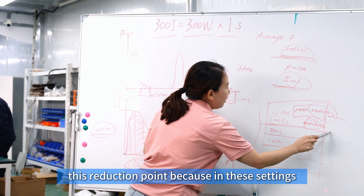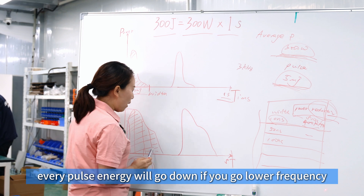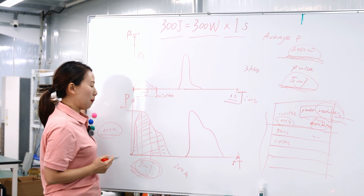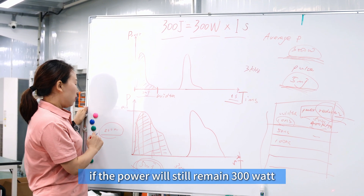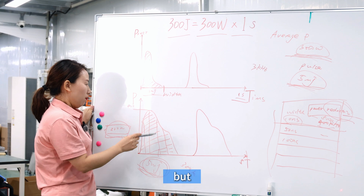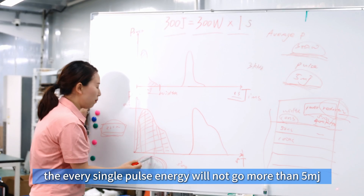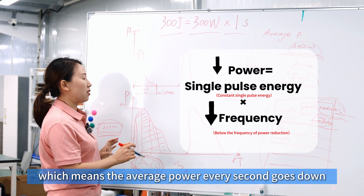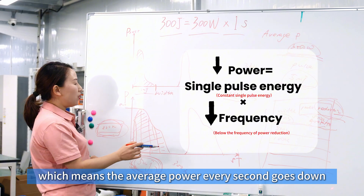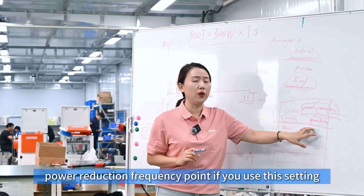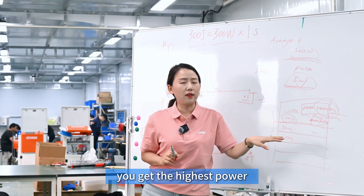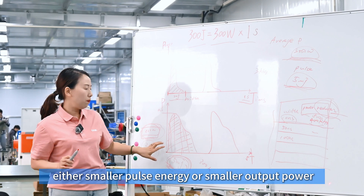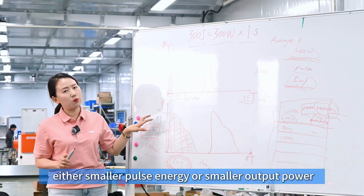If you go higher than the reduction frequency, every pulse energy goes down. If you go lower — say 300 kilohertz pulses per second — the power will still remain 300 watts but the single pulse energy will not exceed 5 millijoules, so it remains at 5 millijoules per pulse but you have fewer pulses, which means the average power per second goes down. That's why it's called the power reduction frequency point. At that exact setting you get the highest average power and the highest pulse energy simultaneously. Changing frequency higher or lower reduces one of them.